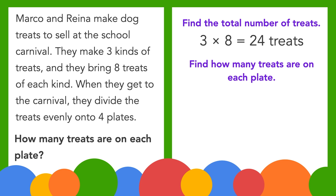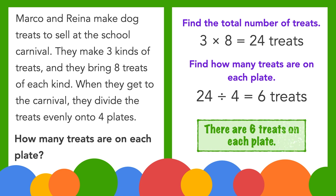Now we can find how many treats are on each plate. We figured out that there are twenty-four treats. The problem tells us they divide them evenly onto four plates. We'll divide twenty-four by four to get the number of treats per plate. Twenty-four divided by four equals six. There are six treats on each plate. That's our answer.